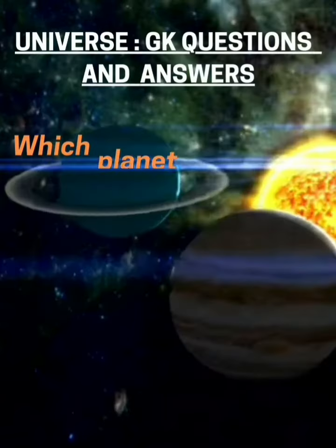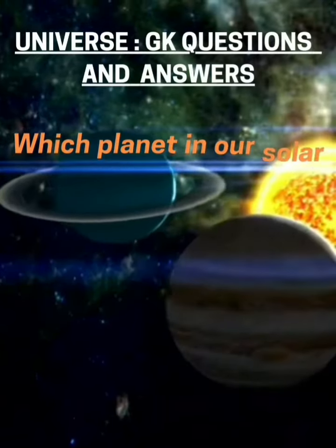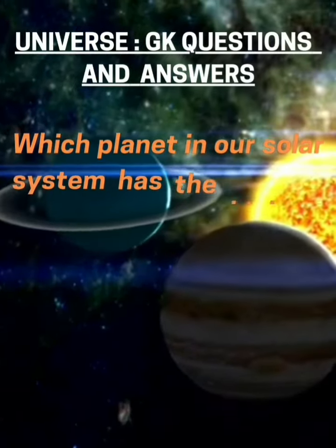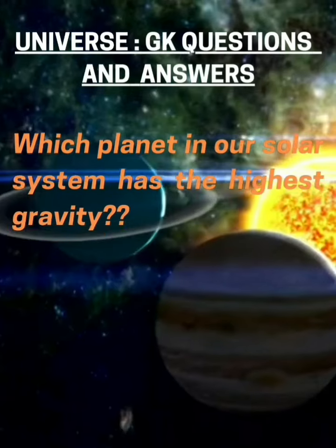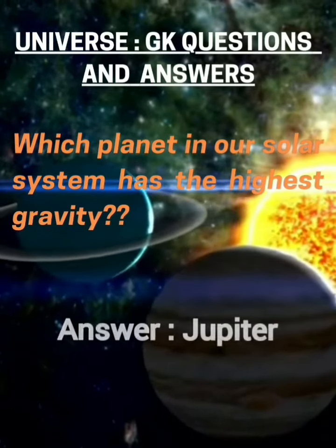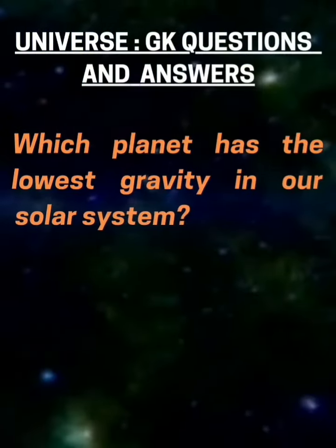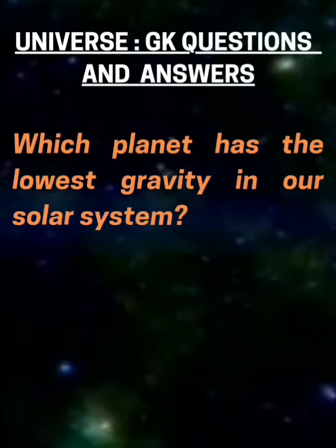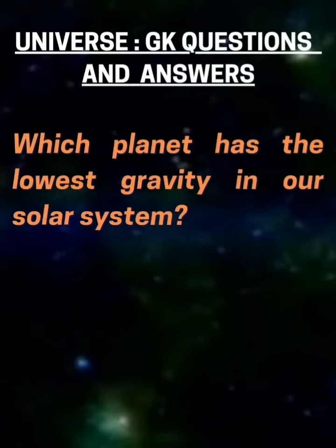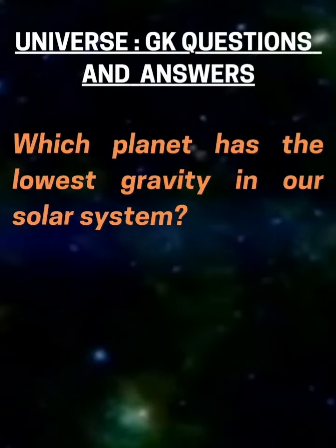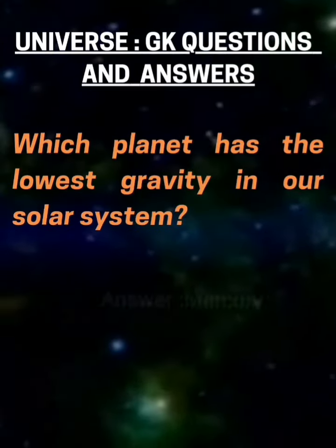Which planet in our solar system has the highest gravity? Answer: Jupiter. Which planet has the lowest gravity in our solar system? Answer: Mercury.